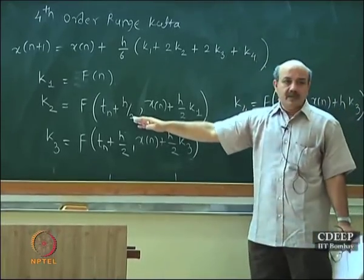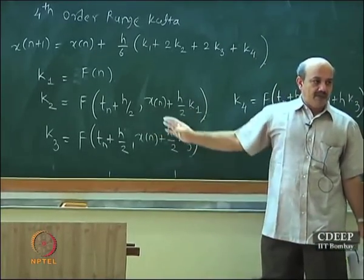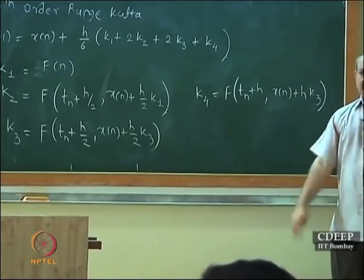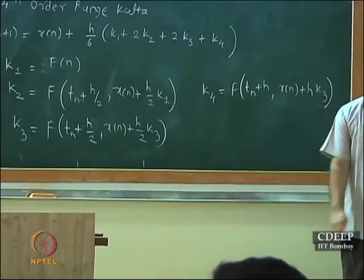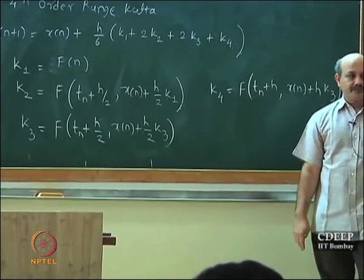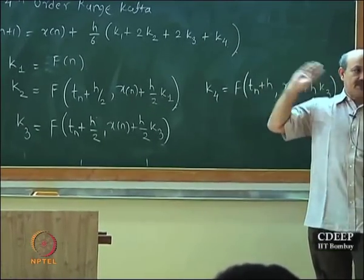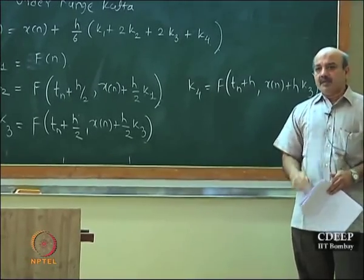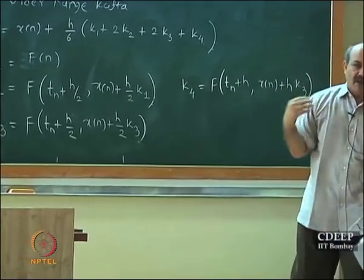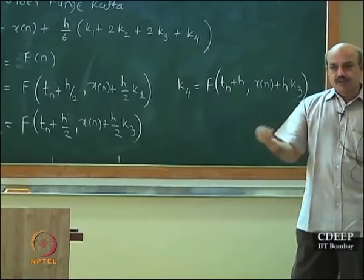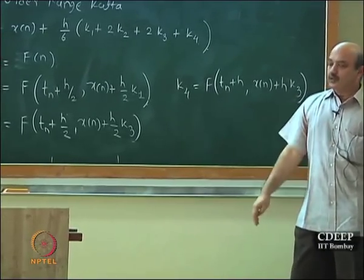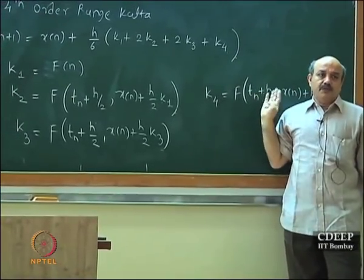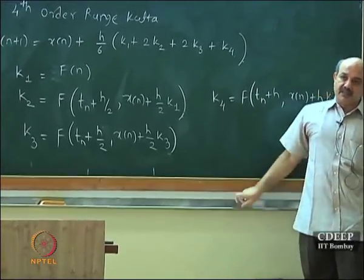There are also alpha, beta, gamma, delta coefficients, plus two more — six coefficients in total — chosen by equating the Taylor series expansion of fourth order and matching coefficients. It's tedious, but matching and choosing free parameters yields this fourth-order Runge-Kutta method. This is the foundation of Runge-Kutta methods: Taylor series expansions.